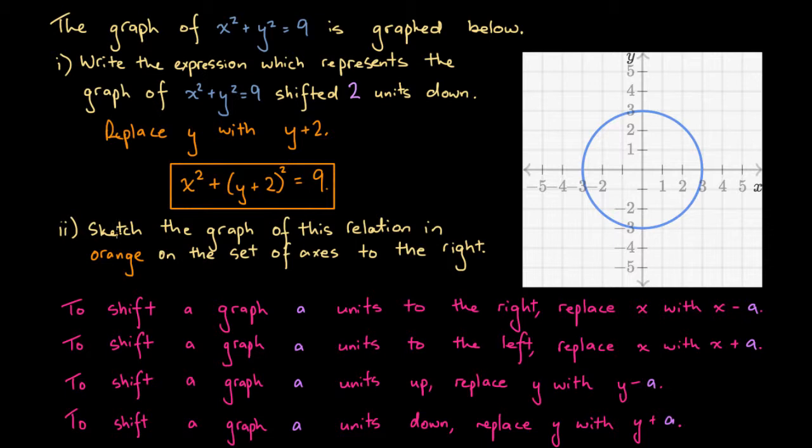Okay, what about for number two? It says sketch the graph of this relation in orange on the set of axes to the right. Well we could go about drawing up a table of values and determining x and y values and so on, but we're told that this expression represents the graph of this blue relation shifted 2 units down. So all we need to do is shift this 2 units down.